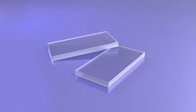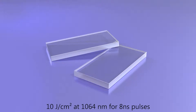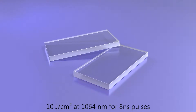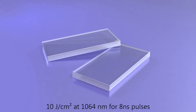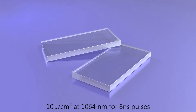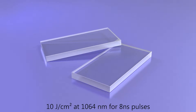Our polarizers have high damage threshold, usually reaching 10 joules per square centimeter at 1064 nm for 8 ns pulses. Due to this property, they are good alternatives to Glan laser or Glan-Taylor polarizers and can be used in both intra and extra cavity.